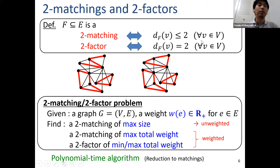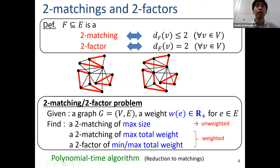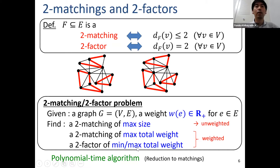Similarly, we can consider two-matchings and two-factors. A set F is called a two-matching if the number of edges incident to each vertex v is at most two, and if we replace this inequality with equality it is called a two-factor. In other words, a two-matching is a vertex-disjoint collection of paths and cycles, and a two-factor is a vertex-disjoint collection of cycles covering all vertices. Both the two-matching and two-factor problems — weighted and unweighted — can be solved in polynomial time.